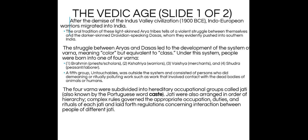Under the varna system, people were born into one of four classes: the Brahmins, who are the priests and scholars; the warriors; the merchants; and the Shudra, who are the peasants and laborers. A fifth class, the untouchables, existed outside the system and were considered unclean because the work they did was ritually polluting. The four varna are divided into hereditary occupational groups called jati. The most commonly known word for this system is actually a Portuguese word — 'caste' — so you've probably heard of the caste system.